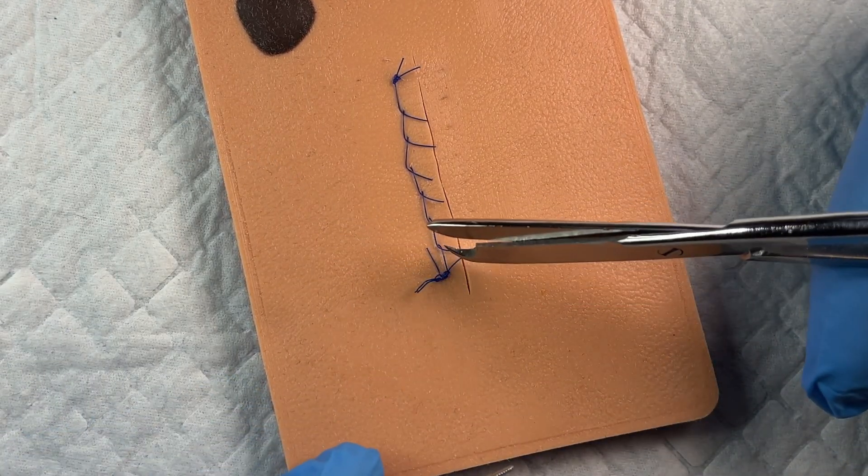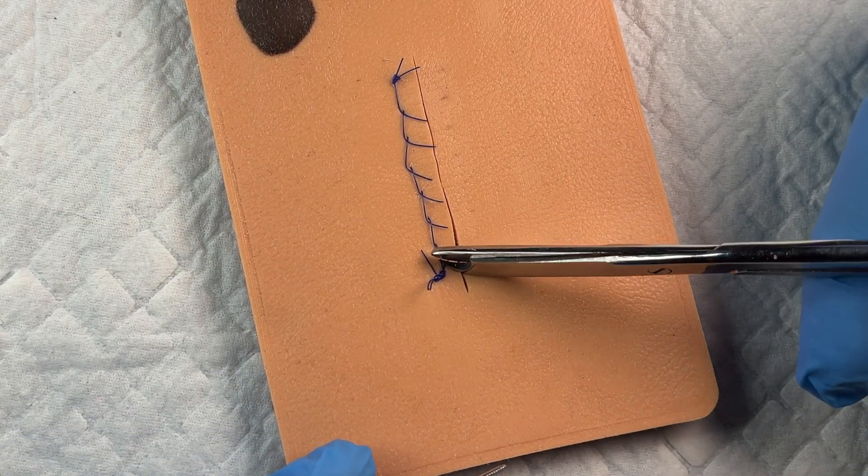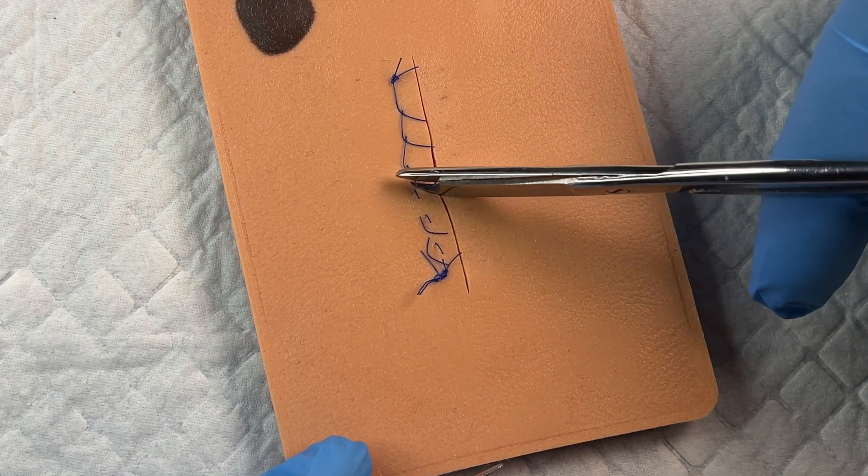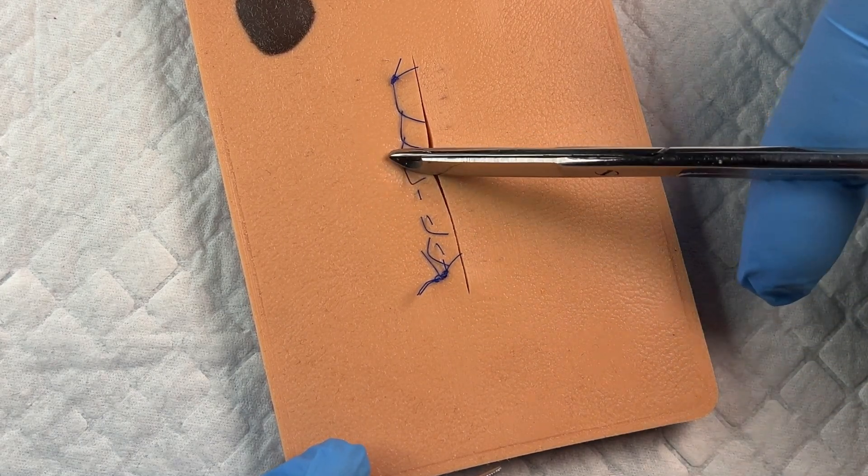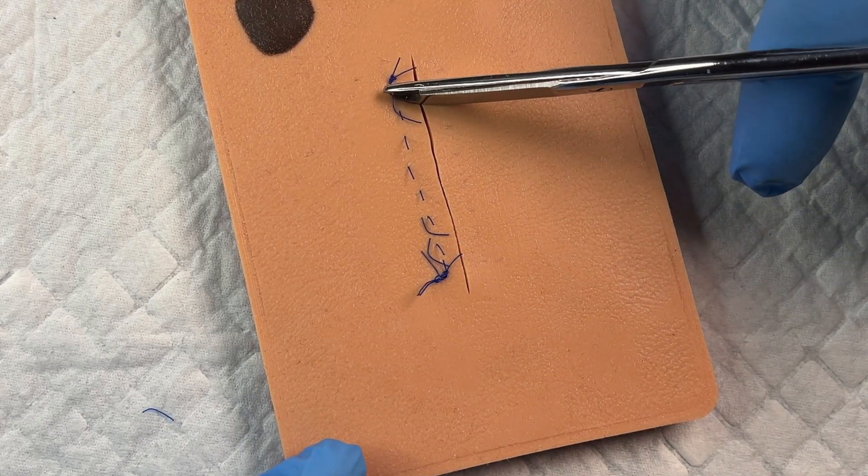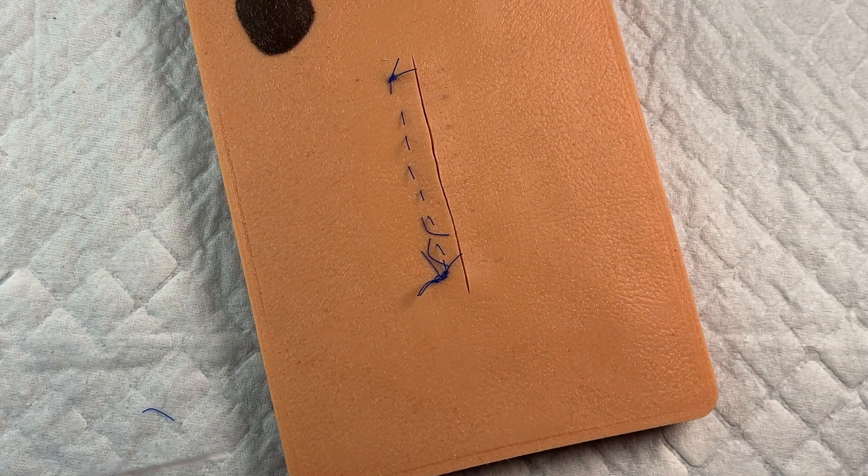And then before you do any pulling, cut right in the middle of these all the way up as well. So we're going to remove this more like a simple interrupted. So we're basically turning this running locking into a simple interrupted.